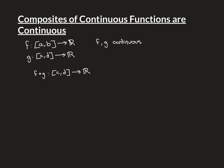That is, if you take any element in the domain [c, d] and ask what g maps it onto, the result must be a real number inside the interval [a, b], so that we can then put it into f. If that weren't the case — if an element were mapped outside [a, b] — you wouldn't be able to define the composite f∘g for that element, because f wouldn't be defined there.